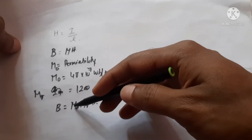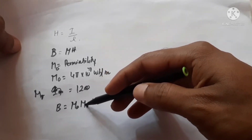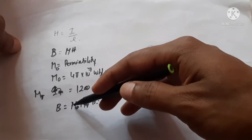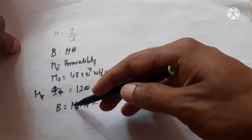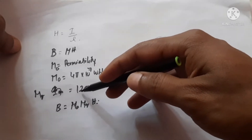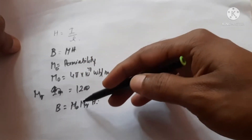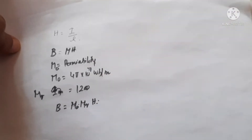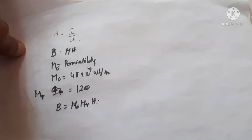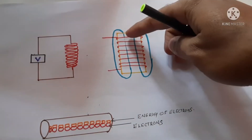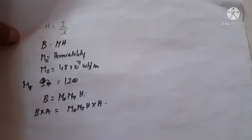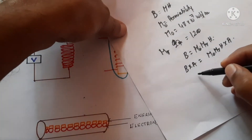If a magnetic field H is applied on a material, how much flux it produces is given by B = μ₀ × μᵣ × H. If iron is used, we multiply the permeability of air by the relative permeability to find how much flux is produced. This is the core, and it has a cross-sectional area. If we multiply the flux density by the area, we get the total flux phi.